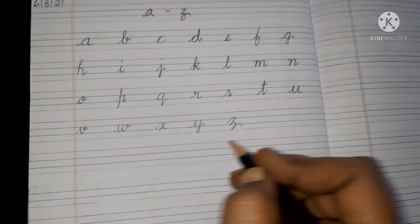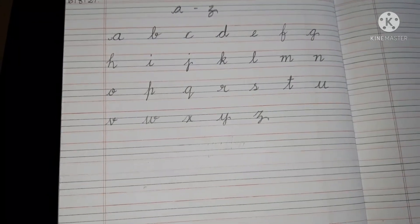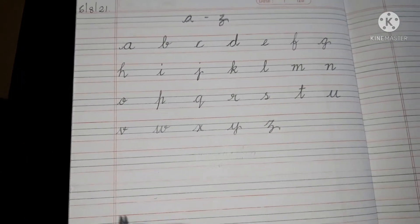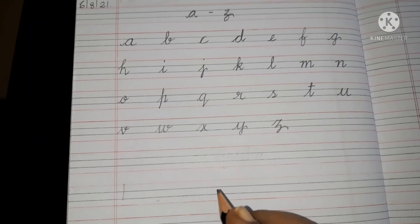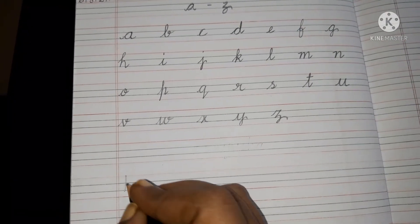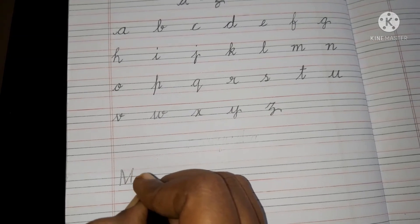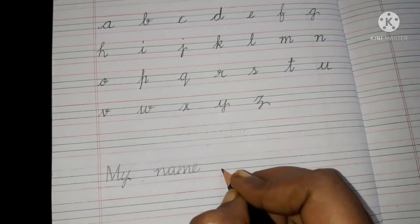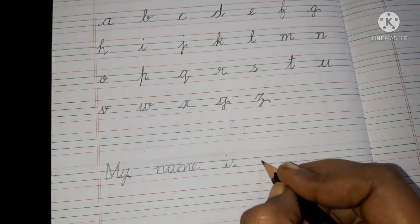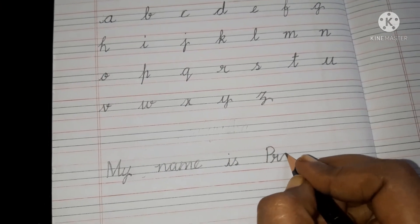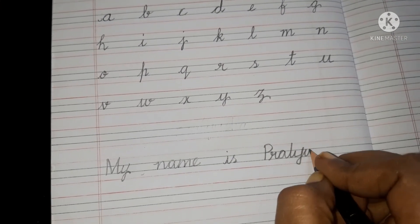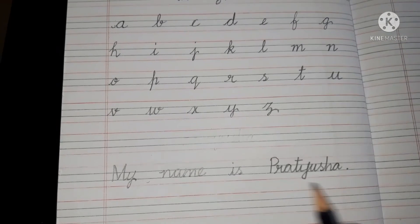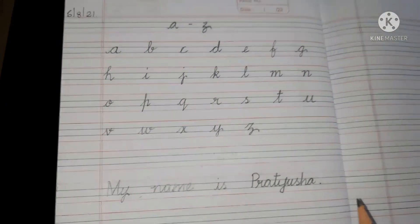Like this you have to write nicely a small letter. Children one more small task I am giving you that after writing a to z small letters leave one line and write my name is, write your name in cursive letters only. See here I am writing my name is, write your name here. My name is Pratyusha like this you have to write your name here and this is your task children.